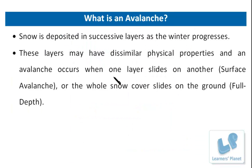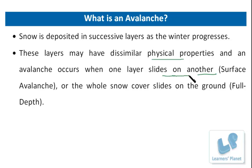What is an avalanche? Snow is deposited in successive layers as the winter progresses, and these layers may have dissimilar physical properties. An avalanche occurs when one layer slides on another — also called a surface avalanche — or when the whole snow cover slides on the ground, which is termed a full depth avalanche. These layers have dissimilar physical properties and avalanches can occur as both surface avalanches and full depth avalanches.